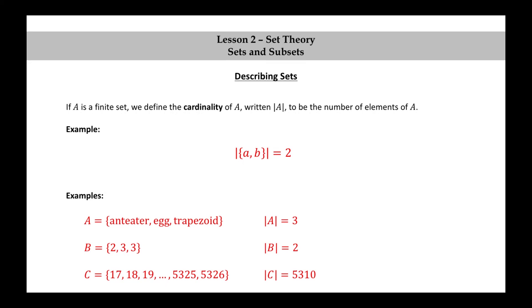Let's see why this would be. I used what I call the fence-post formula here. The fence-post formula says the number of consecutive integers from M to N inclusive is N minus M plus 1. Here M is 17. N is 5,326. So when we plug these numbers into the formula, we get 5,326 minus 17 plus 1, which comes out to 5,310.